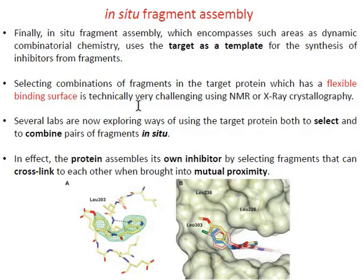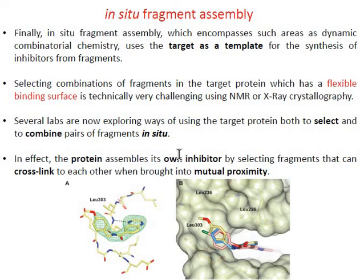In in-situ fragment assembly, some proteins have flexible binding surfaces, making it hard to select combinations of fragments with techniques such as NMR and X-ray crystallography. In-situ techniques are used where the active site of the protein is used to grow the fragment according to the binding pocket of the protein.